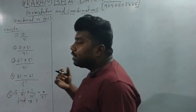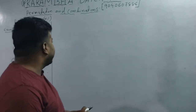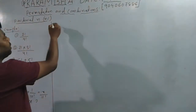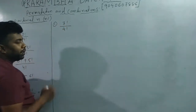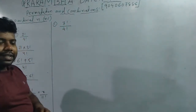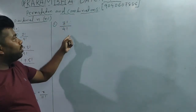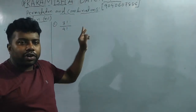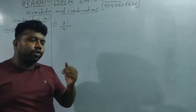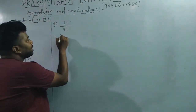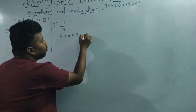So first question — I will ask you factorial, your concept is best to practice. First question: 7 factorial divided by 4 factorial. To solve this, since 7 is greater than 4, the denominator is smaller. So we expand: 7 × 6 × 5 × 4 factorial.